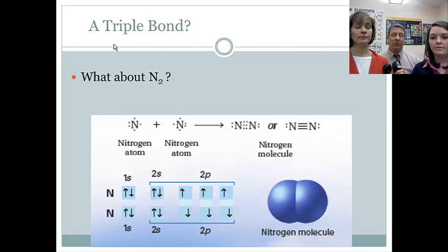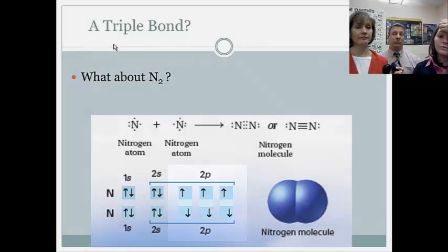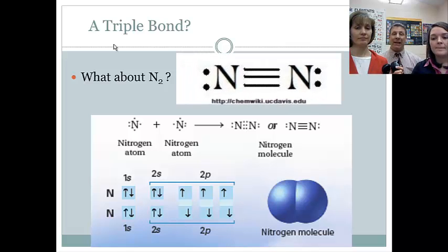And with nitrogen, with nitrogen, you have three unpaired electrons on each nitrogen, and they're all looking for a partner. So all three of those unpaired electrons from each nitrogen are going to be offered up, and you're going to form three covalent bonds between two atoms.